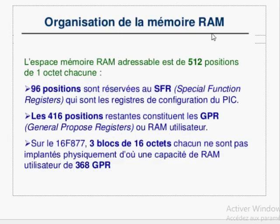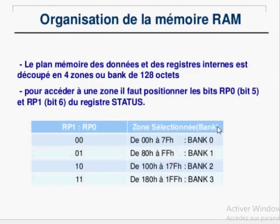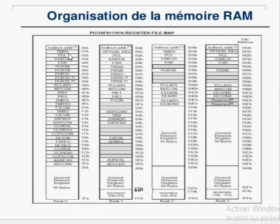L'organisation de la RAM : la RAM est organisée en deux grandes parties. Les registres spécifiques ont une adresse fixe qu'on ne peut pas modifier. Et des registres à usage général GPR, dont les adresses peuvent être utilisées comme des variables pour votre programme. Ici, nous avons quatre pages : la page 0, la page 1, la page 2 et la page 3.